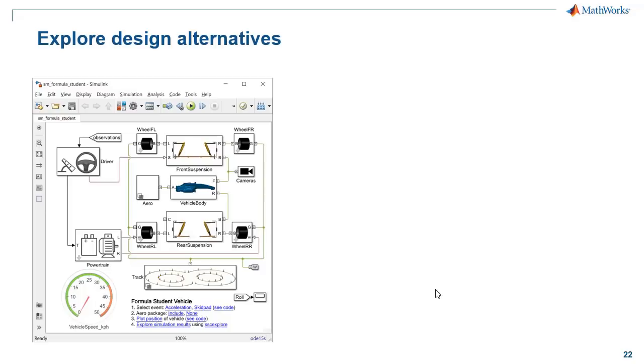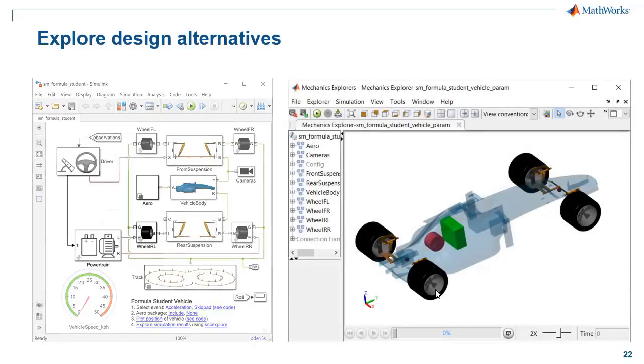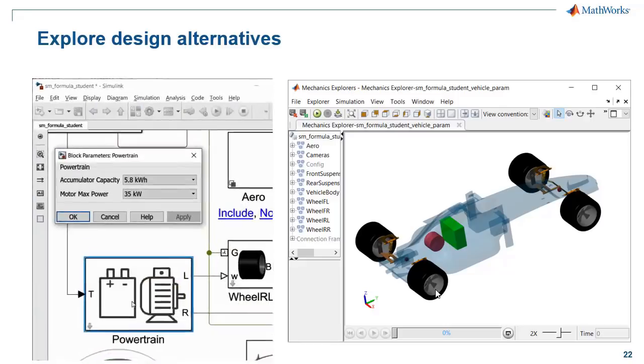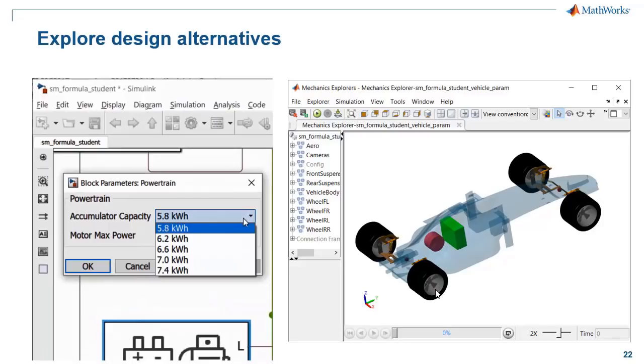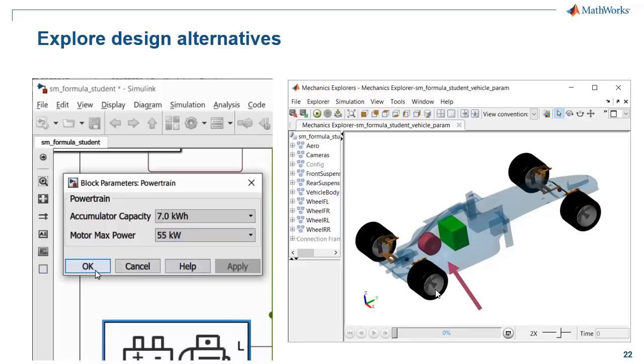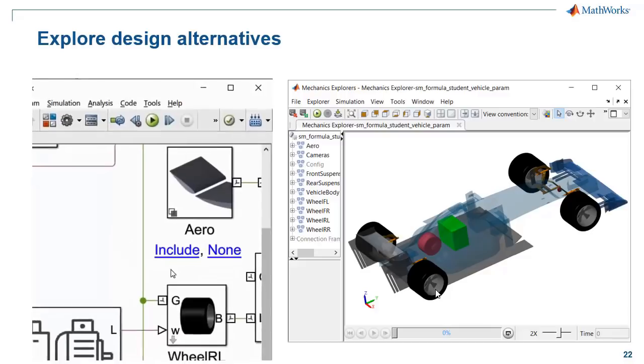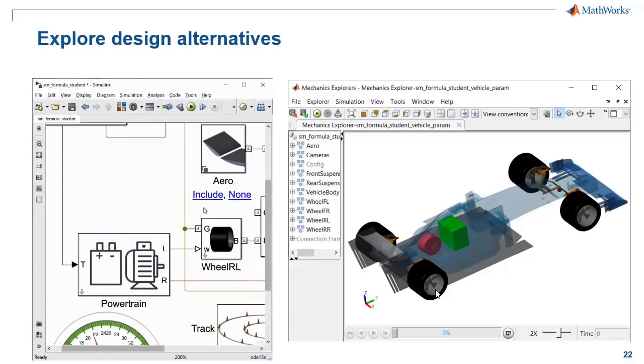So the answer is that we need to explore the various design options and compare the performance of each. So we actually set up our model so that the design parameters are adjustable and we can quickly update them. For example, we can probe into the powertrain system and adjust the accumulator capacity of our battery. And you see that in the physical system, the battery size then increases. And we can also adjust the power of the motor and where it's located. And you see those adjust in our physical design too. And the final adjustment is to add an aerodynamic package, which you see appears on the undercarriage of the race car.